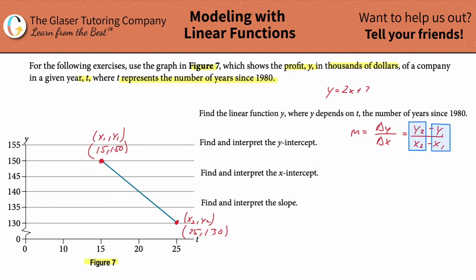You can call the x t, and I will do that later on, but for right now it really doesn't make a difference. So the slope here is going to be the y2 value of 130 minus the y1 value of 150 divided by the x2 value of 25 minus the x1 value of 15. When we do this math, the numerator works out to be negative 20 over 10. So the slope here is going to be negative 2. I just found the slope.